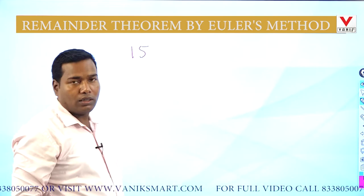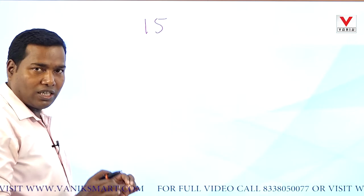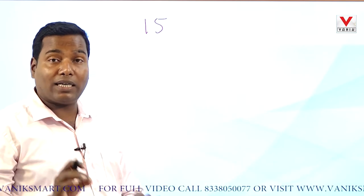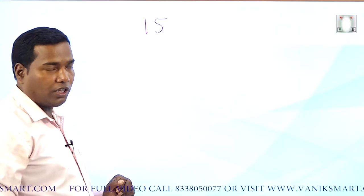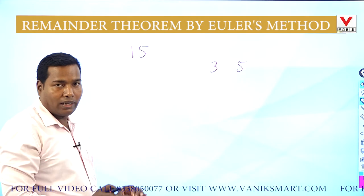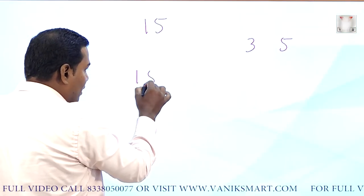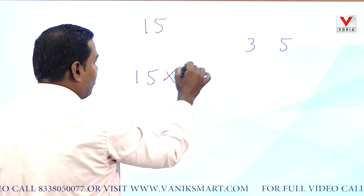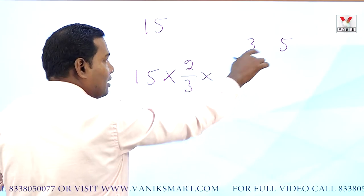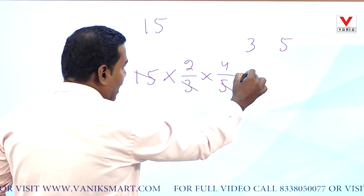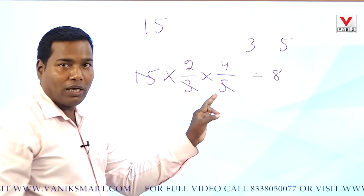To find the Euler's number of any number, we first have to find out the prime factors of that number. Here the number is 15, so its prime factors are 3 and 5. The Euler's number of 15 is: 15 × (2/3) × (4/5) = 8. So 8 is the Euler's number of 15.